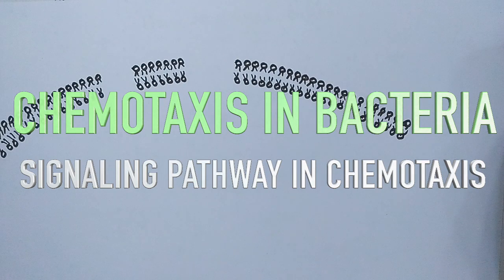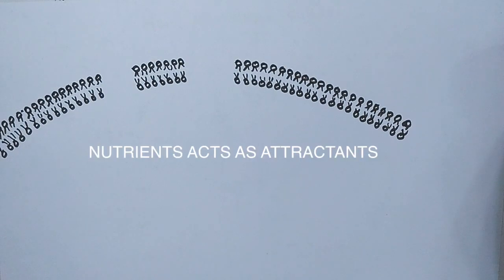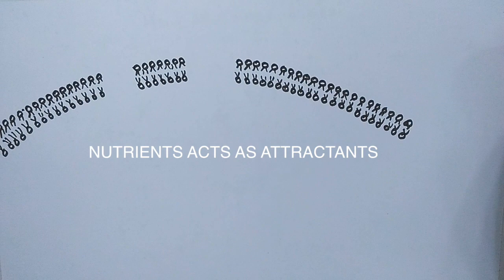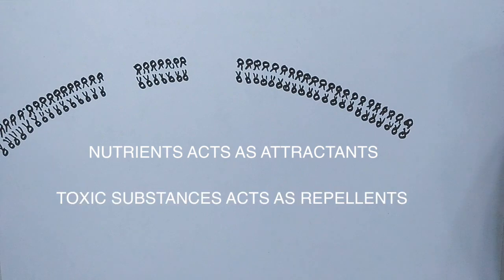When there is any beneficial substance like nutrients which acts as an attractant near the bacterial population, the bacteria will go towards it. On the other hand, when there is any toxic substance which acts as a repellent in its vicinity, the bacterial population will go away from it. This is how chemotaxis works in bacteria.